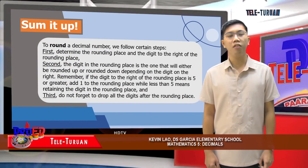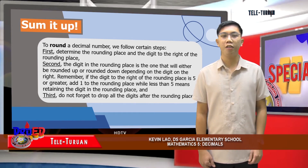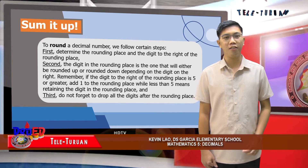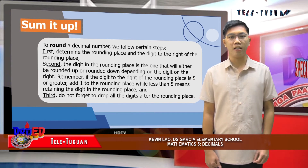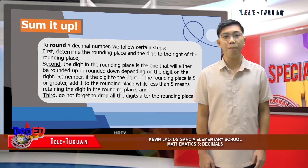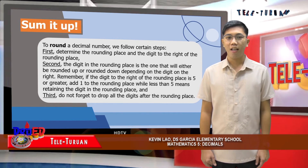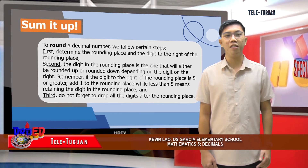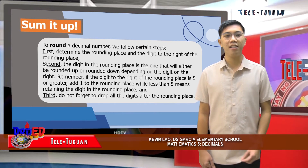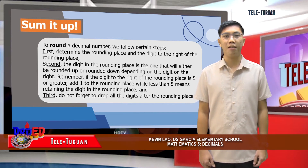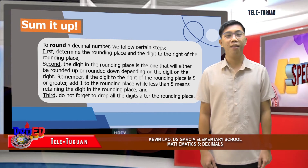Lastly, to round a decimal number, we follow certain steps. First, determine the rounding place and the digit to the right of the rounding place. Second, the digit in the rounding place is the one that will either be rounded up or rounded down depending on the digit on the right. Remember, if the digit to the right of the rounding place is five or greater, add one to the rounding place, while less than five means retaining the digit in the rounding place. Third, do not forget to drop all the digits after the rounding place.